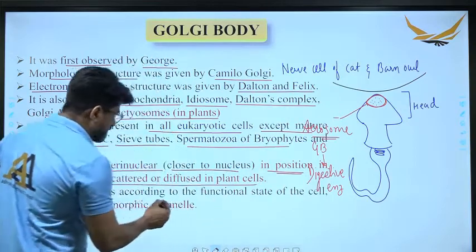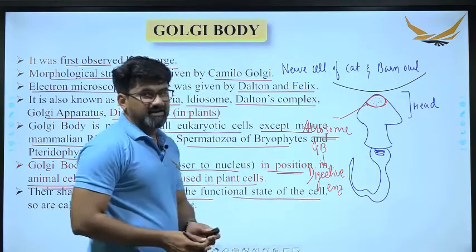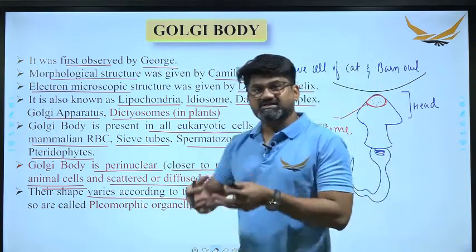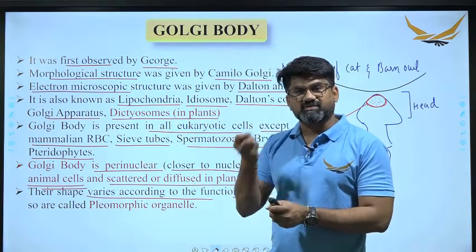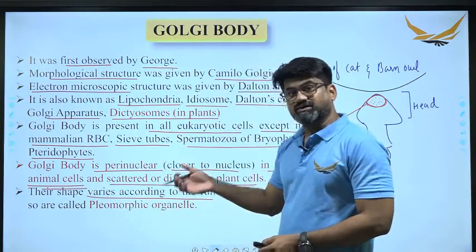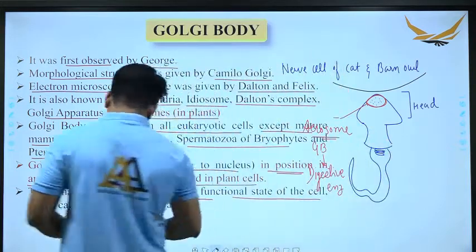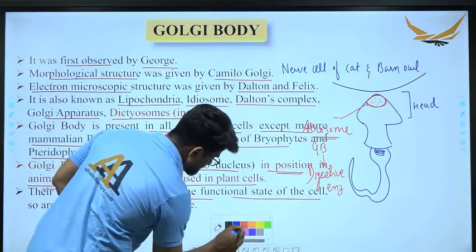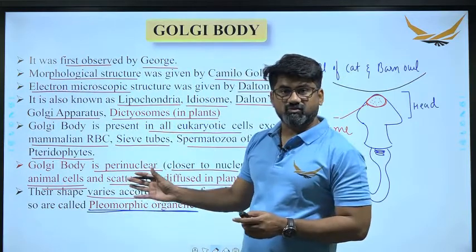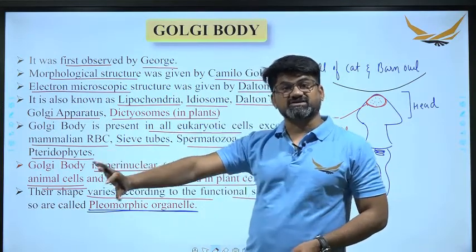The shape of Golgi body varies according to the functional state of the cell. It could be cylindrical or flattened in form, depending on what function the cell is performing. Golgi body is the only organelle that can change its shape according to the function of the cell, and that is why we call it a pleomorphic organelle. Pleo means many, morphic means morphological structure — so Golgi body is a pleomorphic organelle.